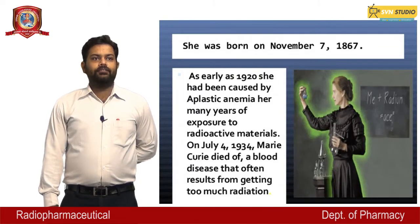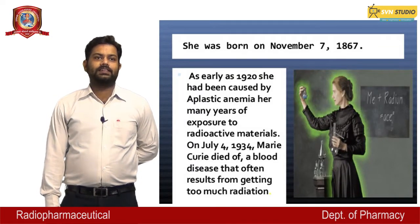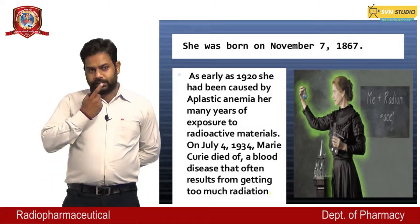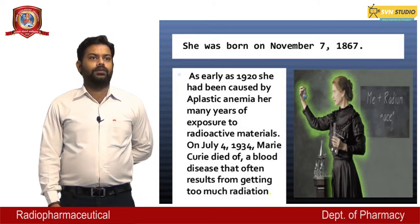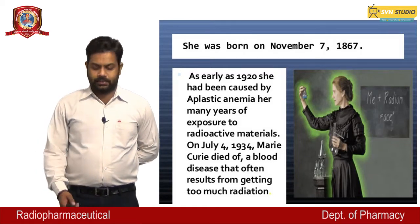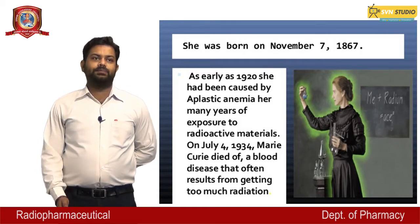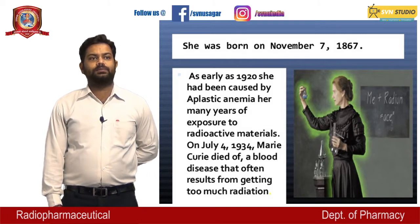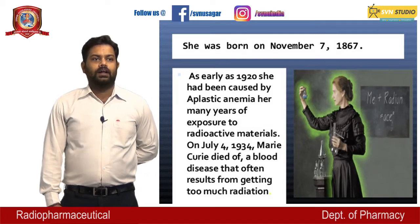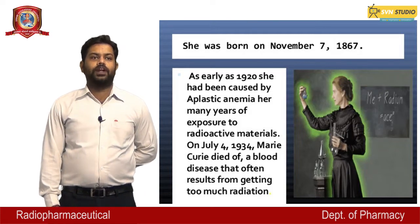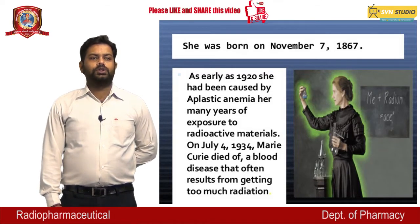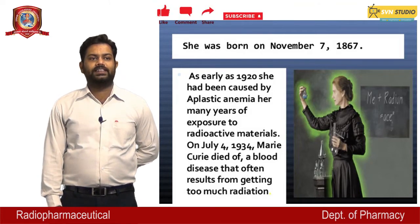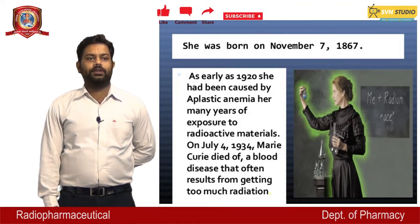Marie Curie was born on November 7, 1867. The unit of radioactivity, the Curie, is named after her. As early as 1920, she had been affected by aplastic anemia caused by her many years of exposure to radioactive materials. On July 4, 1934, Marie Curie died of a blood disease that often results from excessive radiation exposure.